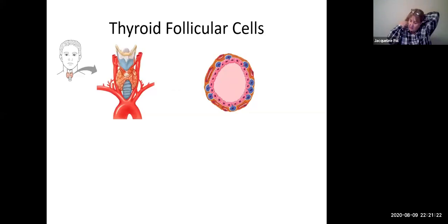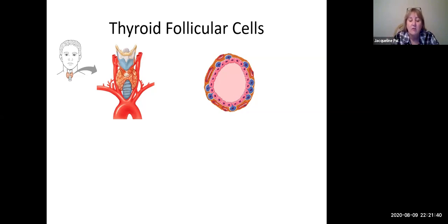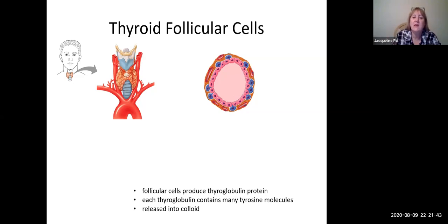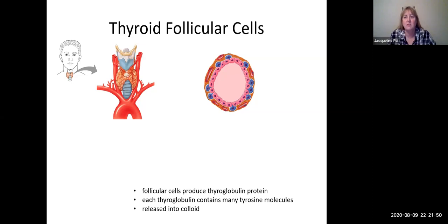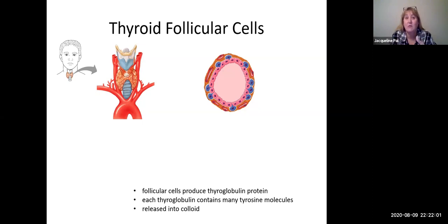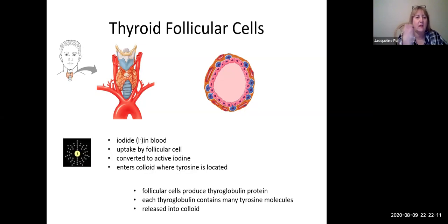Looking back at the same pictures of the thyroid gland, the calcitonin came from the C cells — the blue cells. Now we're talking about the pink follicular cells and the pink amorphous non-cellular material known as colloid in the middle. These follicular cells produce a protein known as thyroglobulin — 'globulin' just means a protein, so this is the protein made by the thyroid gland. Each thyroglobulin contains many molecules of the amino acid tyrosine. This thyroglobulin with the tyrosine attached gets released into the colloid.